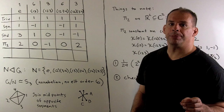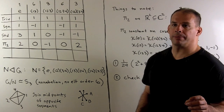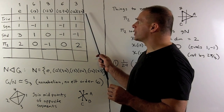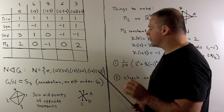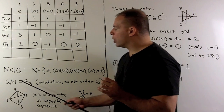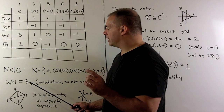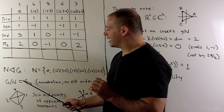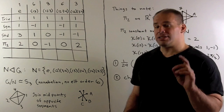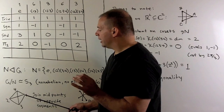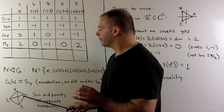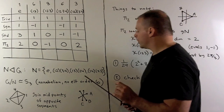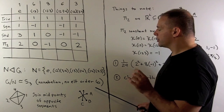To find another irreducible character, we consider quotients by normal subgroups. Specifically, taking the conjugacy class of products of disjoint two-cycles together with the identity gives a normal subgroup of order four. The quotient group has six elements, and since it's non-abelian and has no element of order six, it must be isomorphic to S3. To see this directly with the tetrahedron: joining the midpoints of opposite sides gives three segments, and any symmetry of the tetrahedron maps these segments into each other, realizing an S3 action.